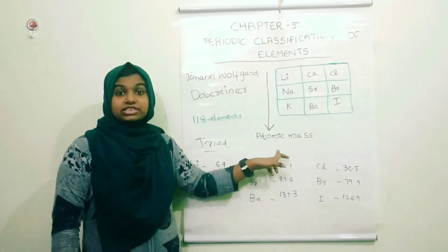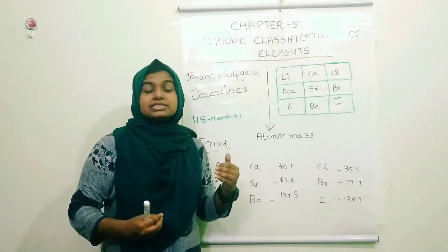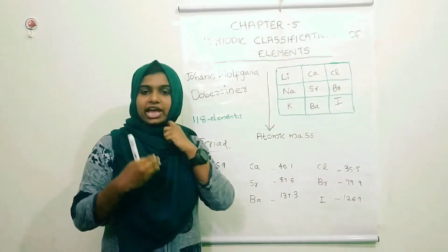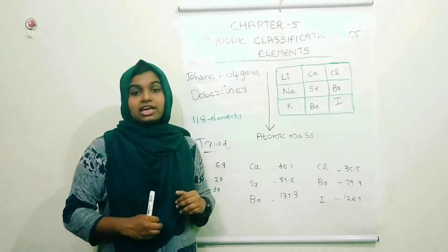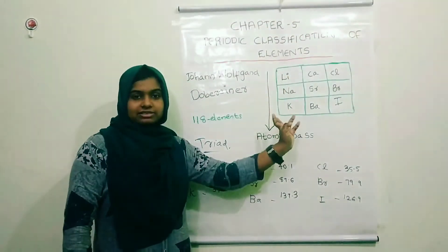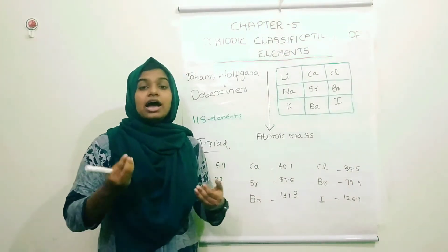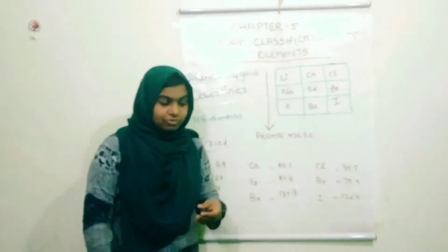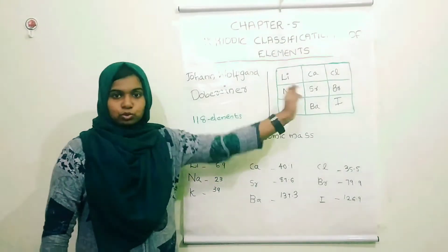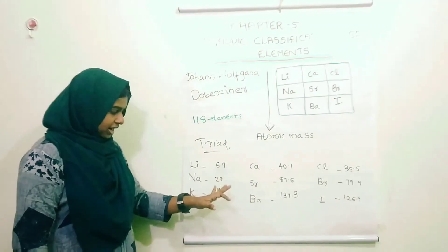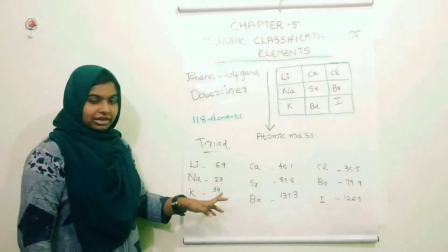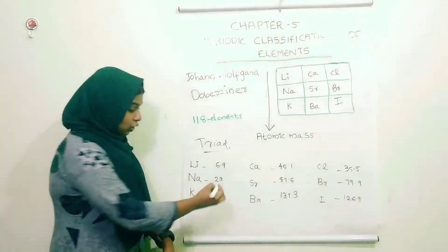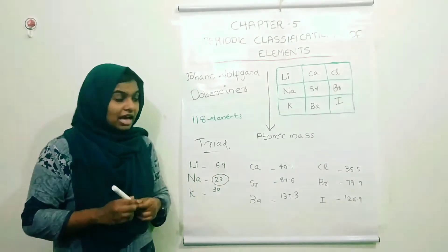Atomic mass is arranged in increasing order. The atoms are: lithium, sodium, potassium. Atomic mass is increasing in the form of increasing atomic number. The first element is lithium and the third is potassium. The atomic mass of the central element — sodium — is compared. Lithium and potassium have atomic masses of 6.9, 23, and 39. The average is: x plus y divided by 2. So 6.9 plus 39 divided by 2 equals approximately 23. This is the sodium atomic mass. It's similar — this is a triad.